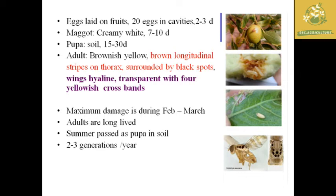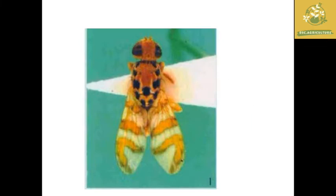The characteristics of the fruit fly life cycle: eggs are laid on the fruit through oviposition punctures with an incubation period of two to three days. Maggots are creamy white with a larval period of seven to ten days. The pupa pupates in the soil. The adult is brownish-yellow with transparent wings having four yellowish cross-bands. They complete two to three generations per year.